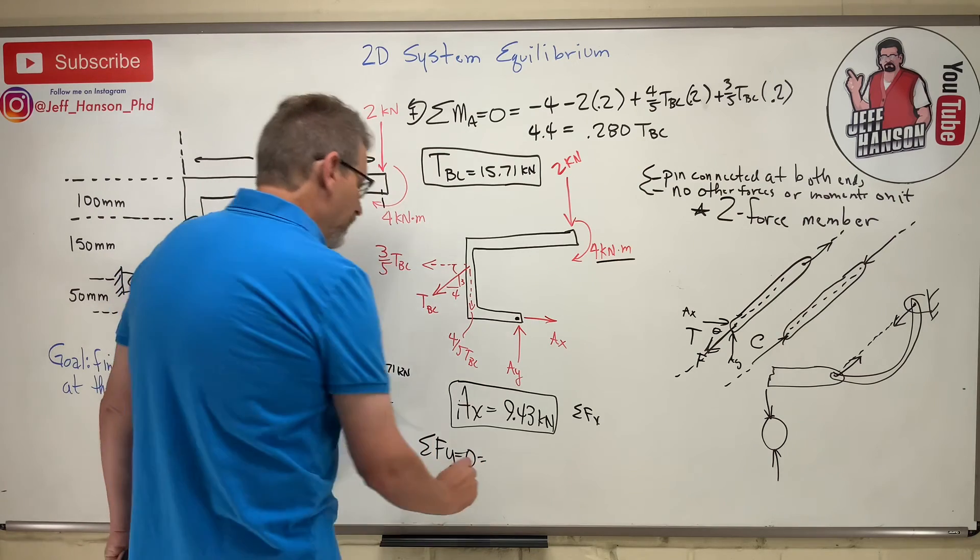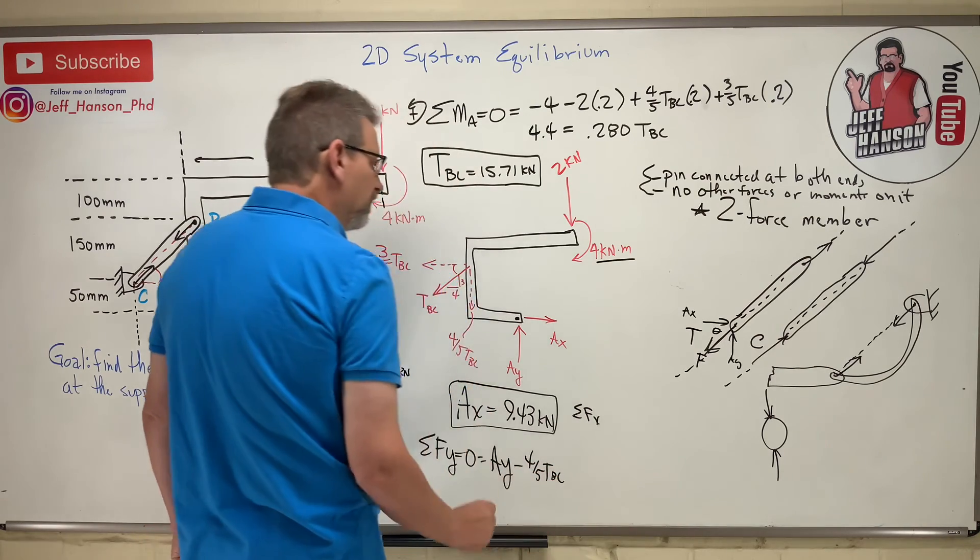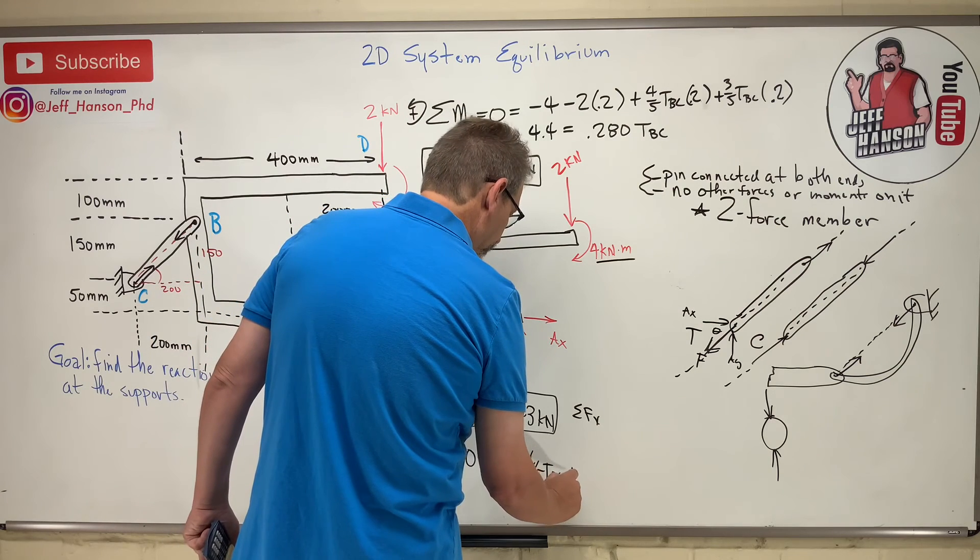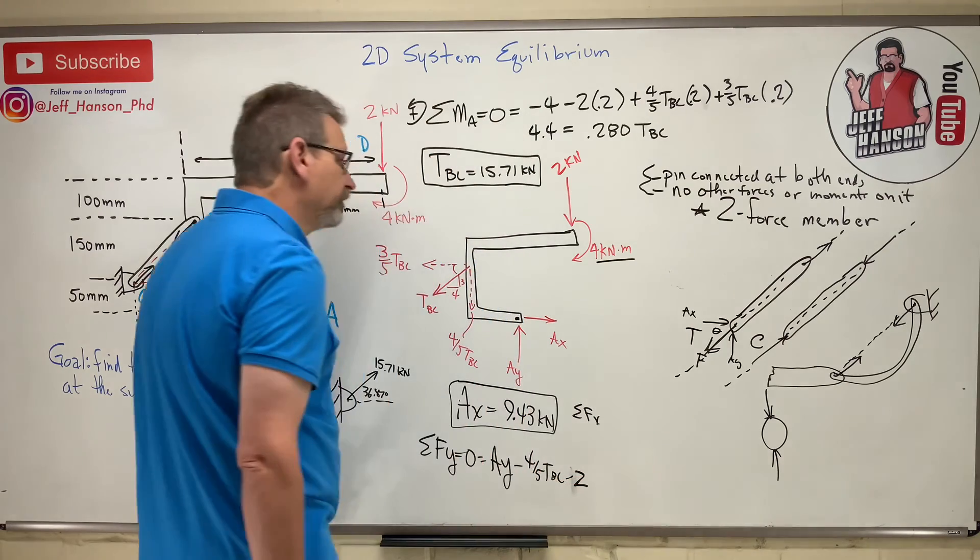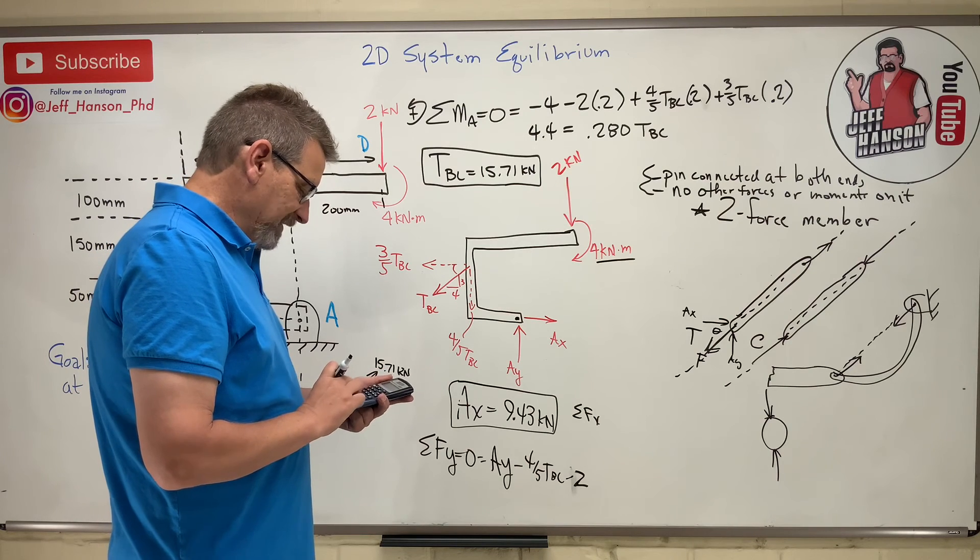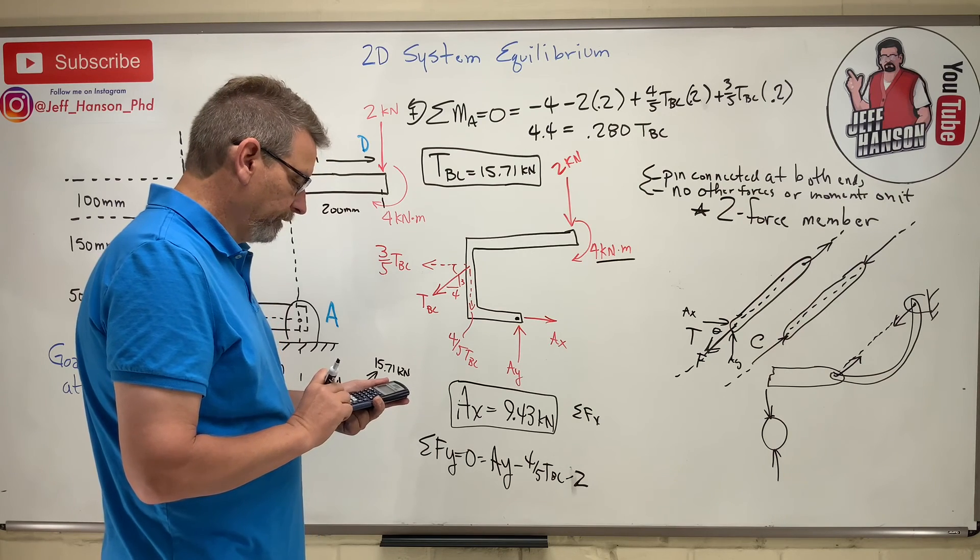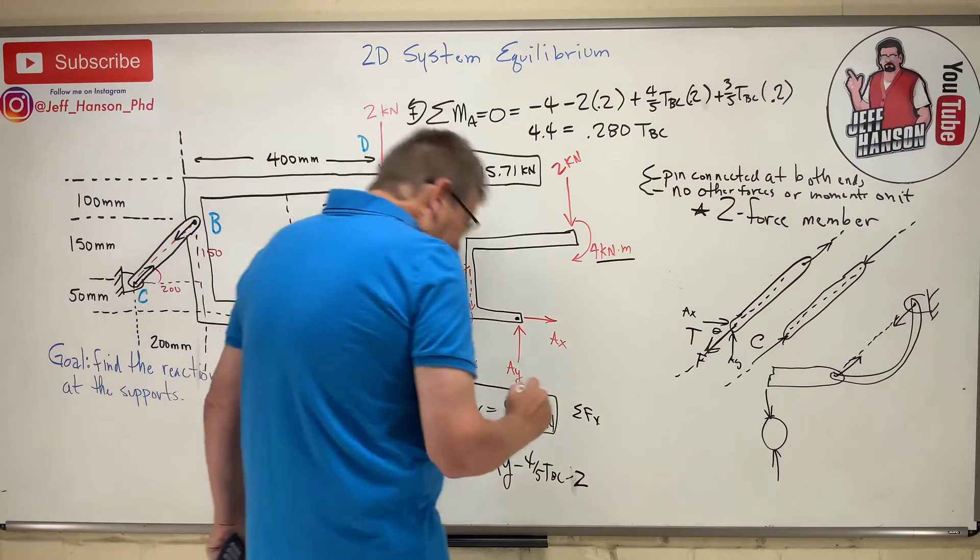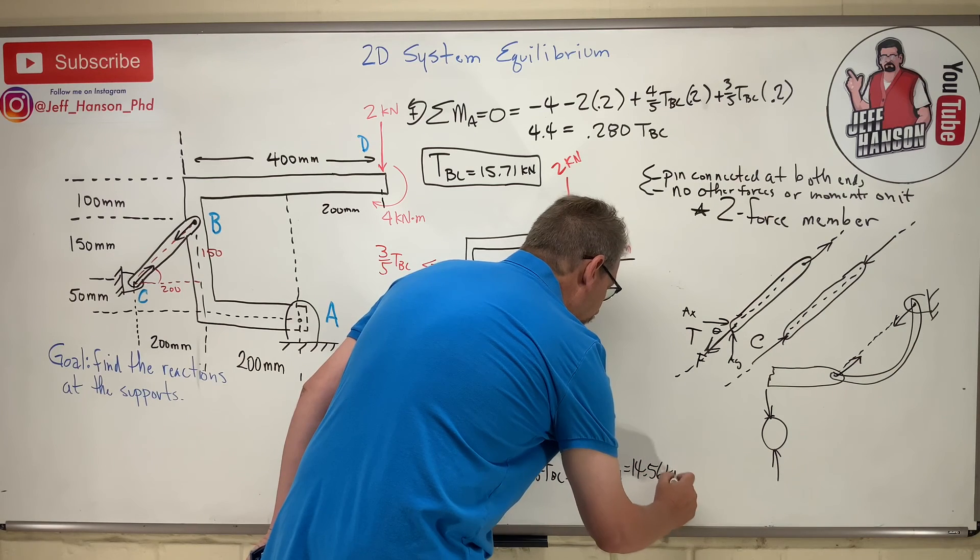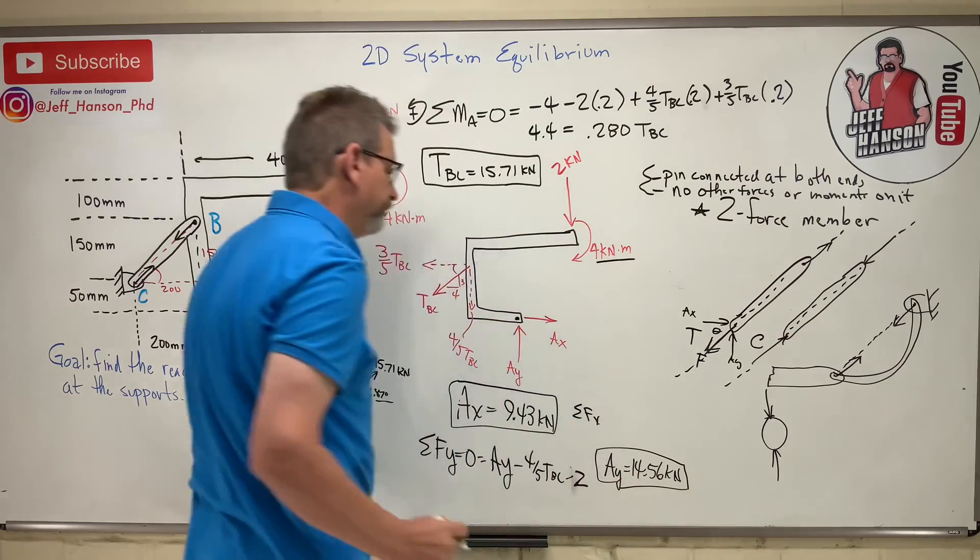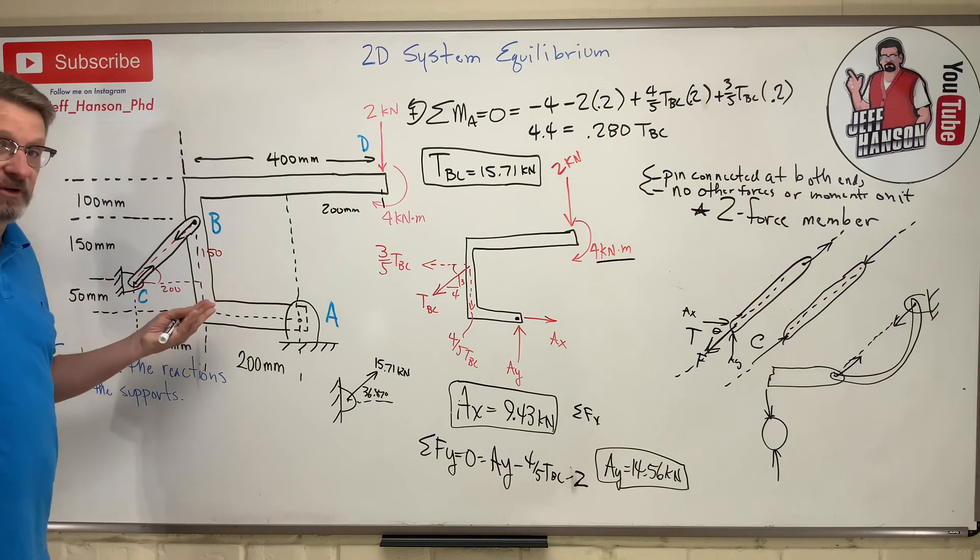And what do we have in the Y direction? We have Ay going up. We have minus four-fifths TBC going down. And we got two going down. Whoops. Going down, that would be a minus. Uh-oh. And that's all we have. So what do we have there? We have 0.8 times 15.7 plus two equals 14.56. Hey! Joe! Excuse me! Ay equals 14.56 kilonewtons. So there's your reactions at A. There's the force in member TBC. And this is a very typical kind of 2D problem for chapter 2.